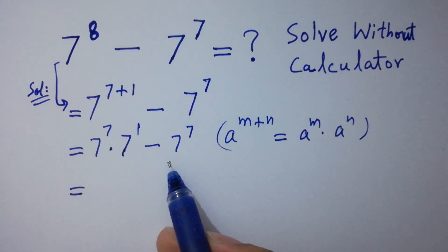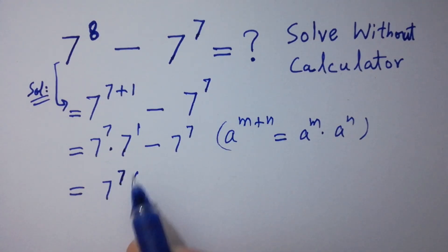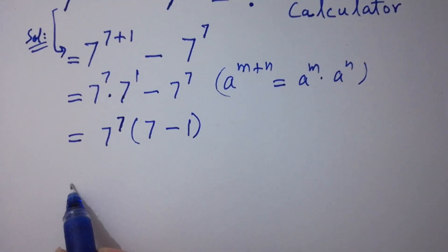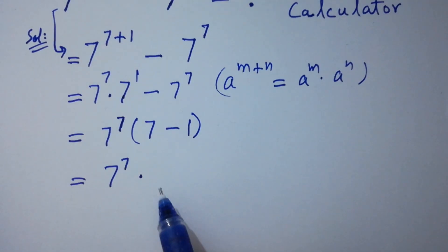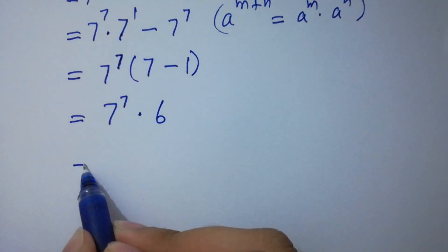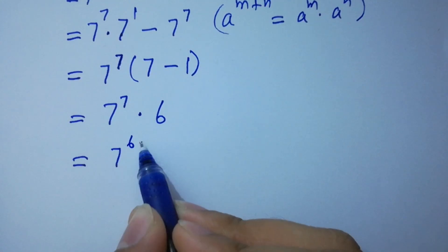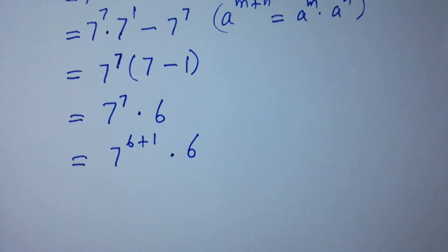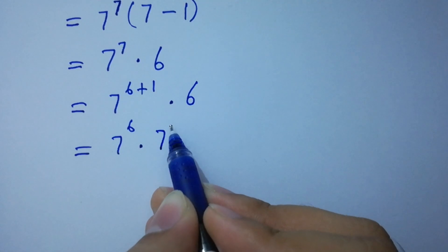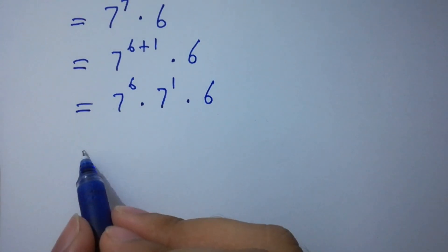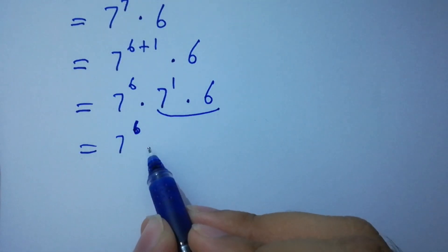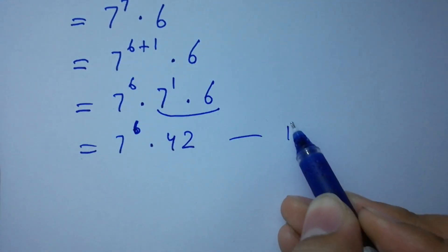Here 7 to the power 7 can be common. Then we have 7 as it is minus 1. Next, 7 to the power 7 — 7 minus 1 is 6, which is the same as 7 to the power 6 plus 1 times 6. Let this be the first equation.